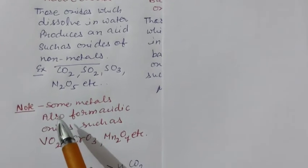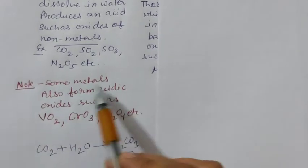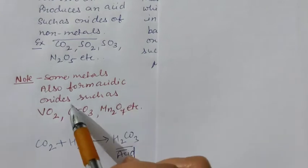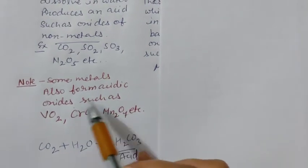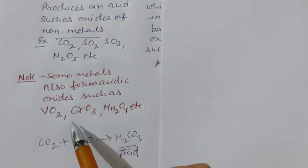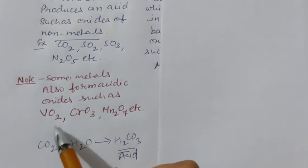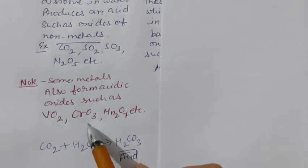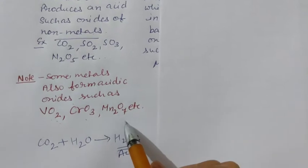The noting point is that some metals also form acidic oxides, basically which belong to the transition metals like VO2 vanadium oxides, chromium oxide, and manganese oxide.